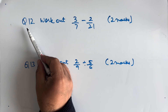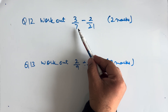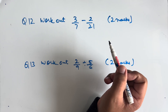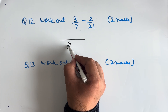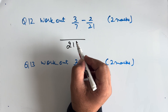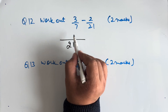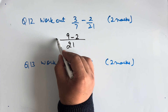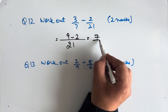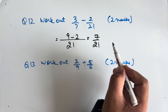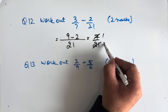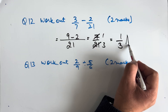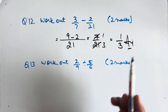Question 12: Work out 3/7 minus 2/21. This is worth 2 marks. We take LCM as 21. Seven threes are 21, so 9 minus 2 = 7/21. This cancels to give 1/3 as our final answer.